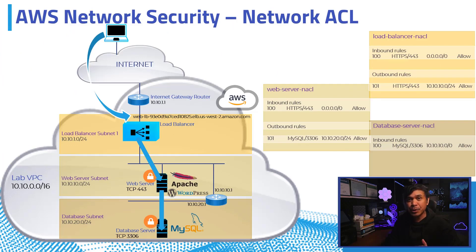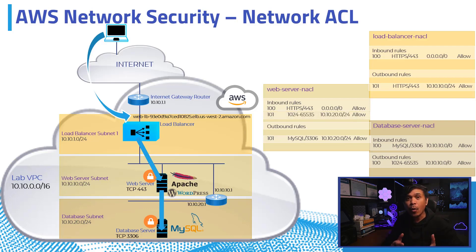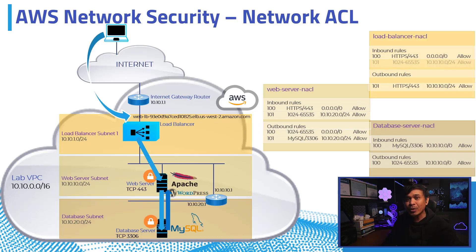Now let's talk about the upstream or return traffic. From the database server NACL, we allowed the database return traffic as outbound rule number 100. From the web server NACL, we allowed the return traffic from the database server as inbound rule number 101. Also from the web server NACL, we allowed the return traffic to the load balancer as outbound rule number 100. From the load balancer NACL, we allowed the traffic from the web server as inbound rule number 101.